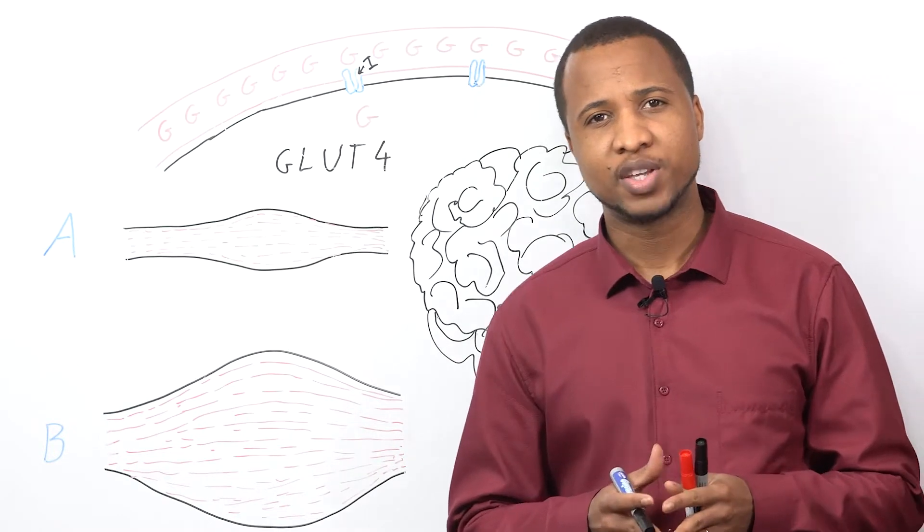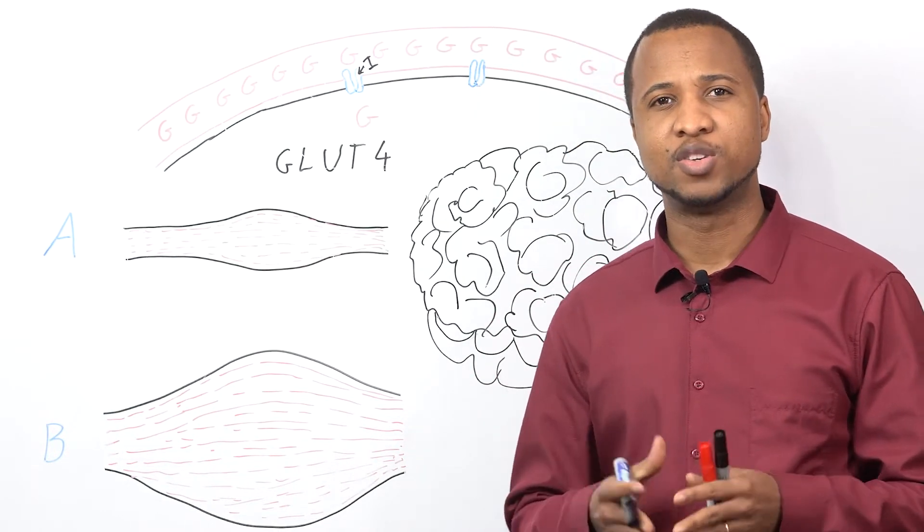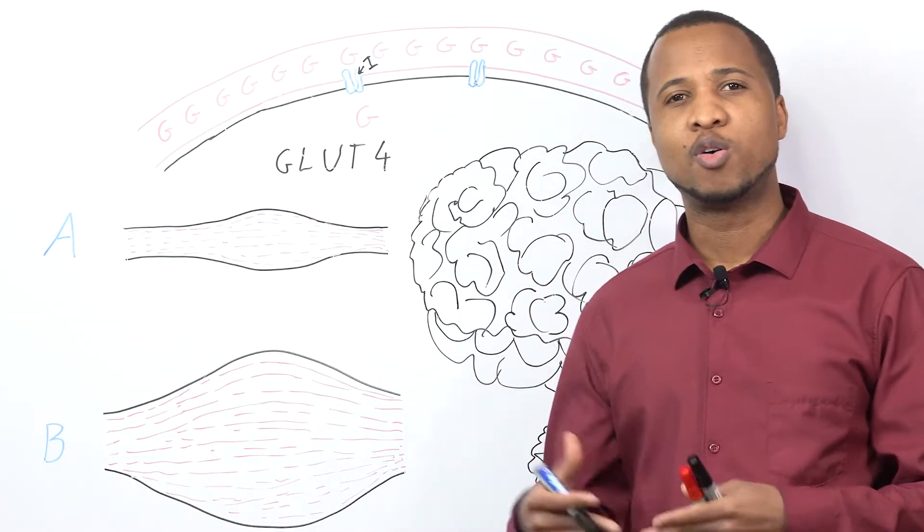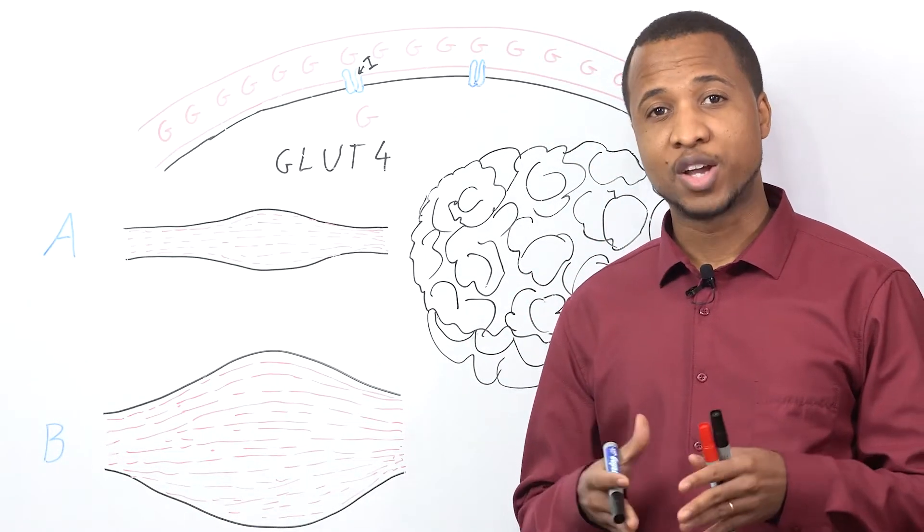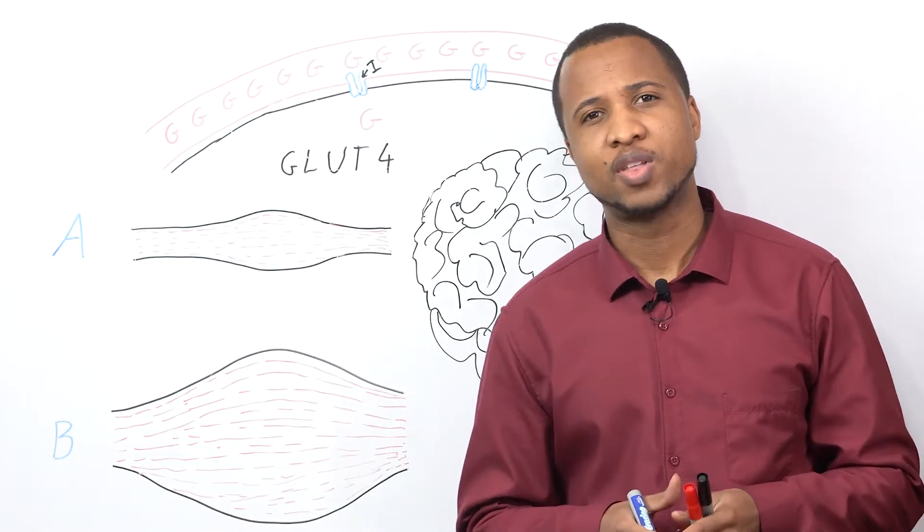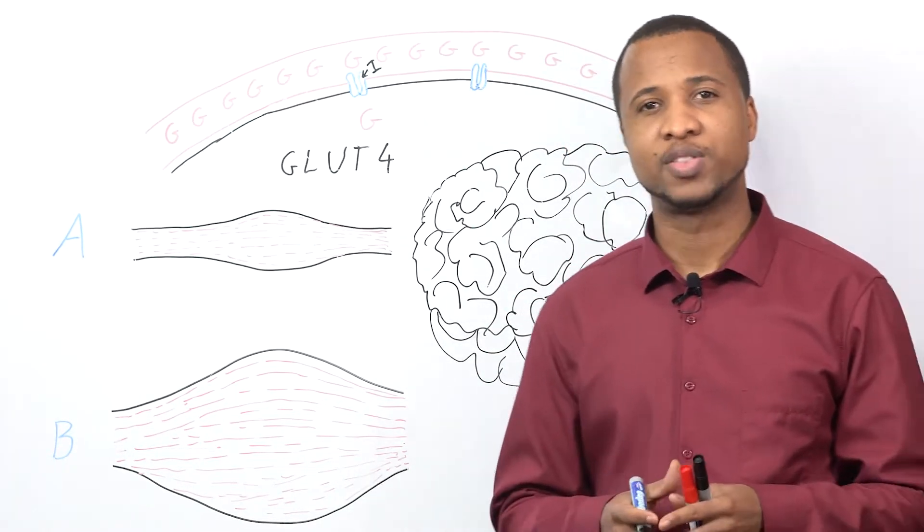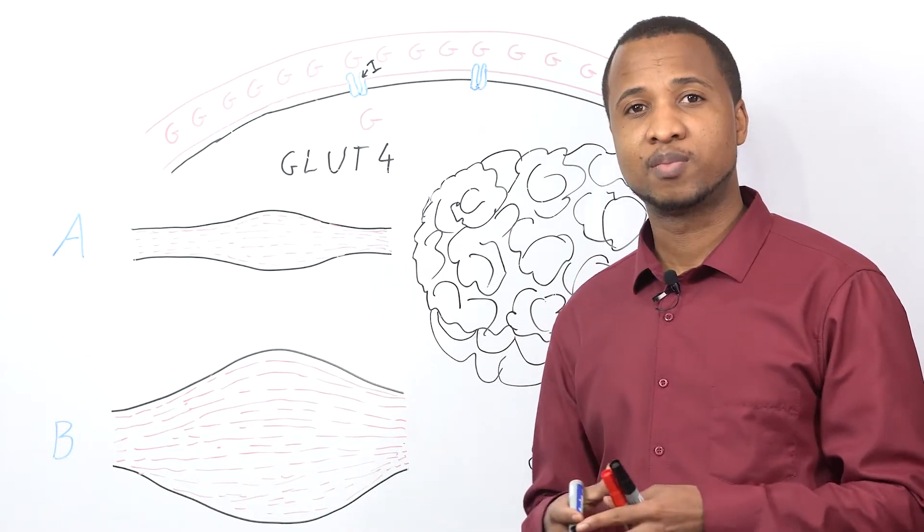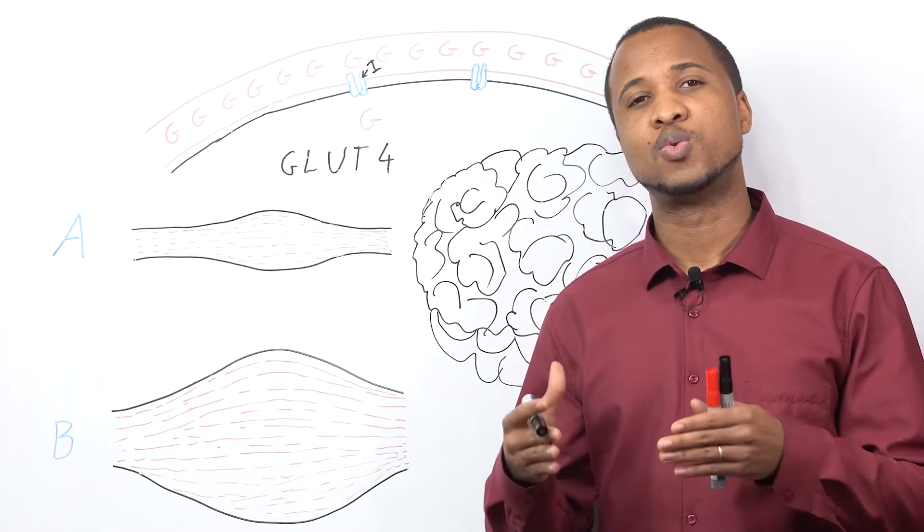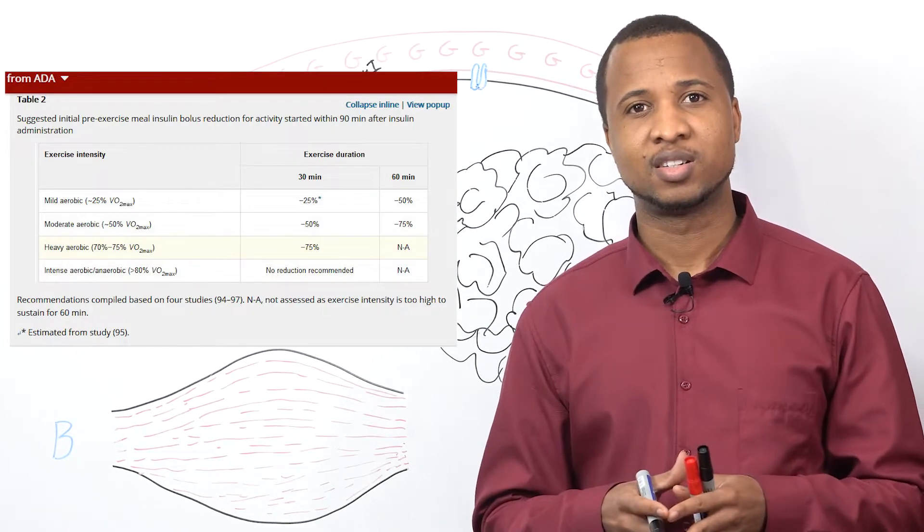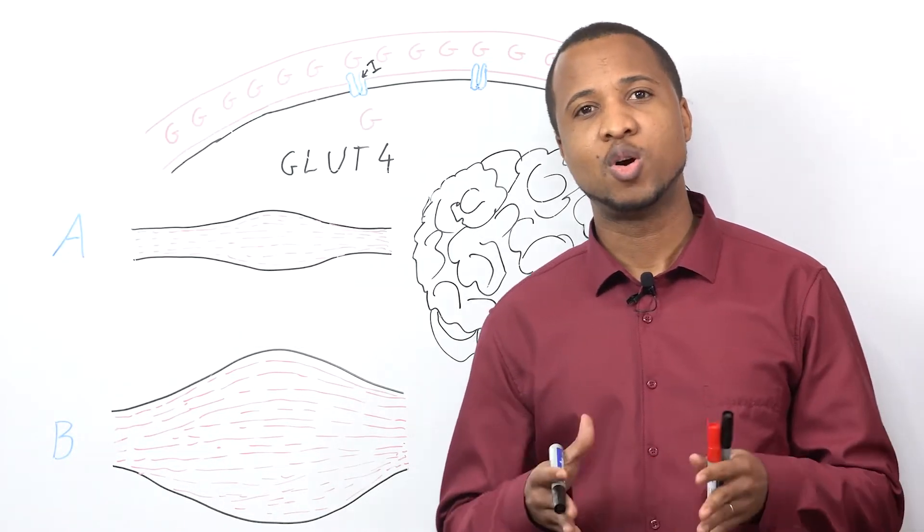Now, a lot of people think about exercise as something you can do to lower your blood sugar. Many people go for a walk just to try to reduce their blood glucose. Well, it's possible to do that. It's actually so possible that if you have patients on insulin, you normally tell them to reduce their insulin intake before they exercise, because exercise can lower your blood sugar.